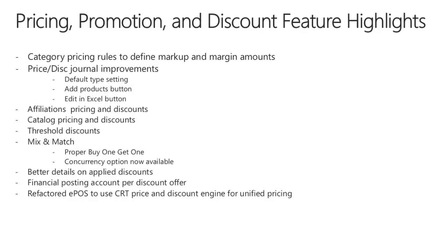There are some small new features added to the price discount journal. The first is the default typesetting. In previous versions, when creating a new line on a price journal, you start with a purchasing price agreement, and as a retailer you would have to change the dropdown for every line so that you are working on the sales prices. Now there is a default on the journal name, so if you pick the retail journal, every record will default to the sales price or line discounts depending on what you have selected for the default.